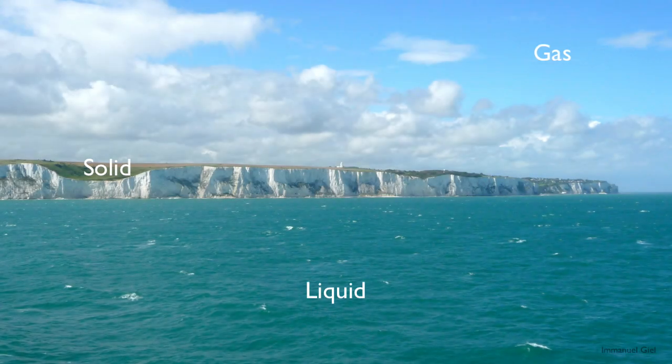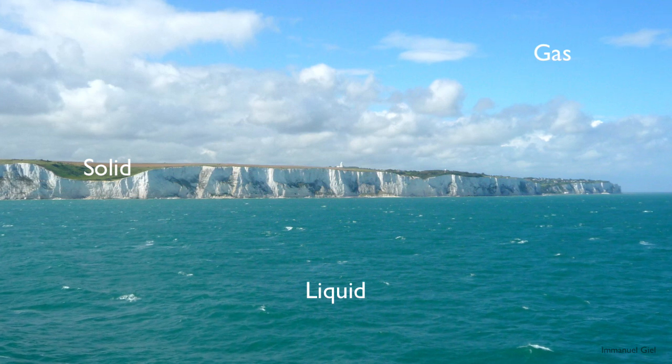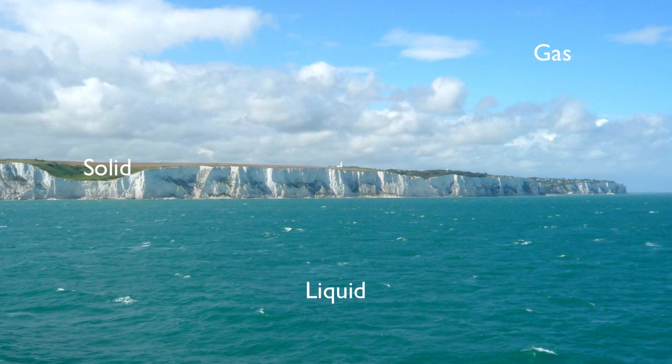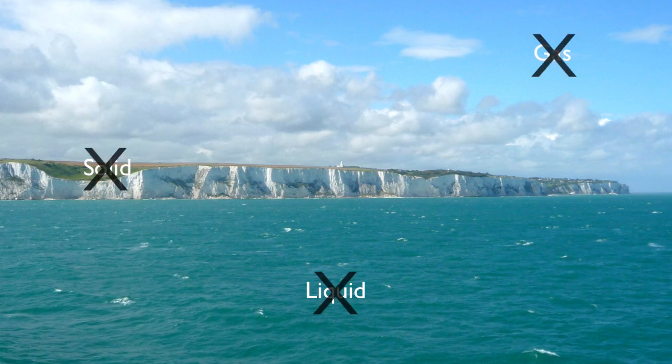Solid, liquid, gas. What phase of matter is the most abundant in our solar system? Answer? None of these.